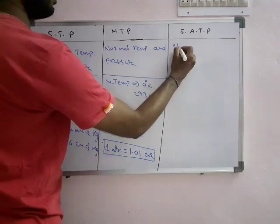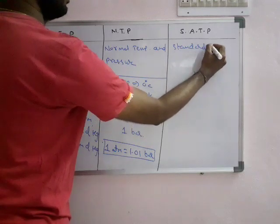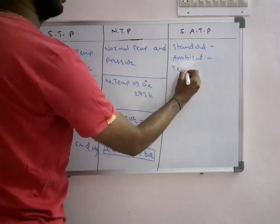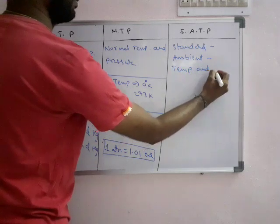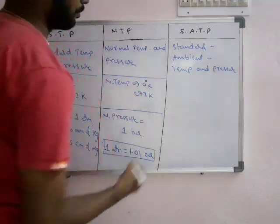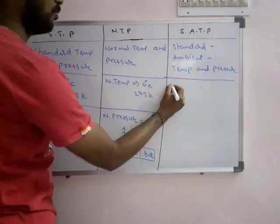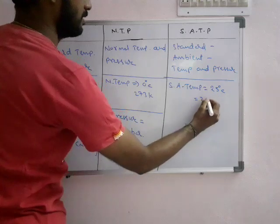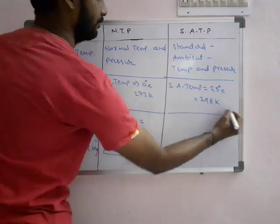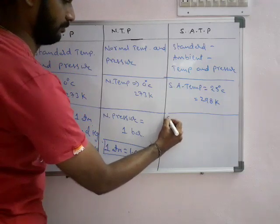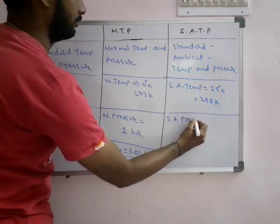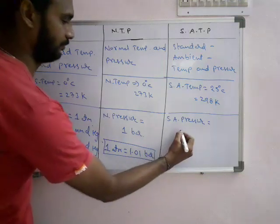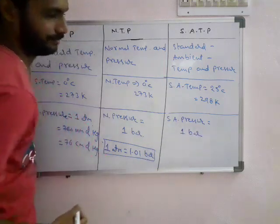Next, what is SATP? This is a very rare case — it stands for Standard Ambient Temperature and Pressure. The standard ambient temperature is 25 degrees Celsius or 298 Kelvin. The standard ambient pressure is also 1 bar.